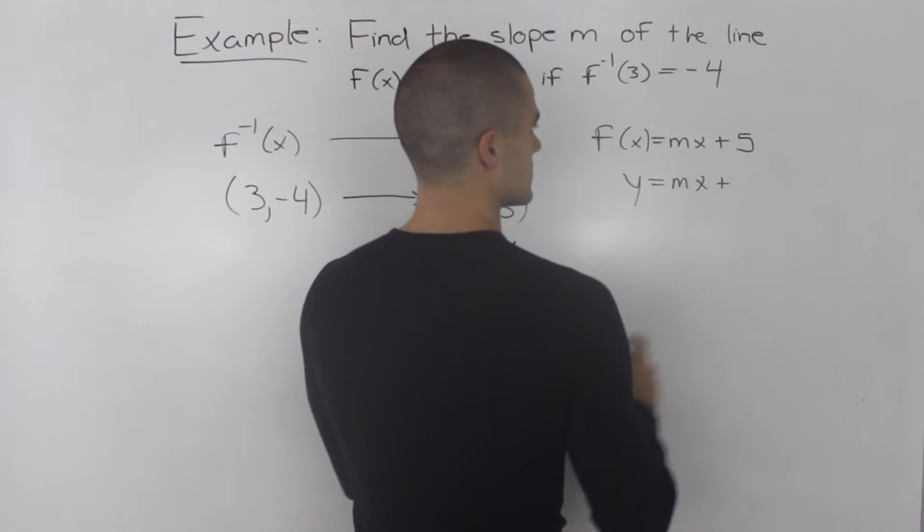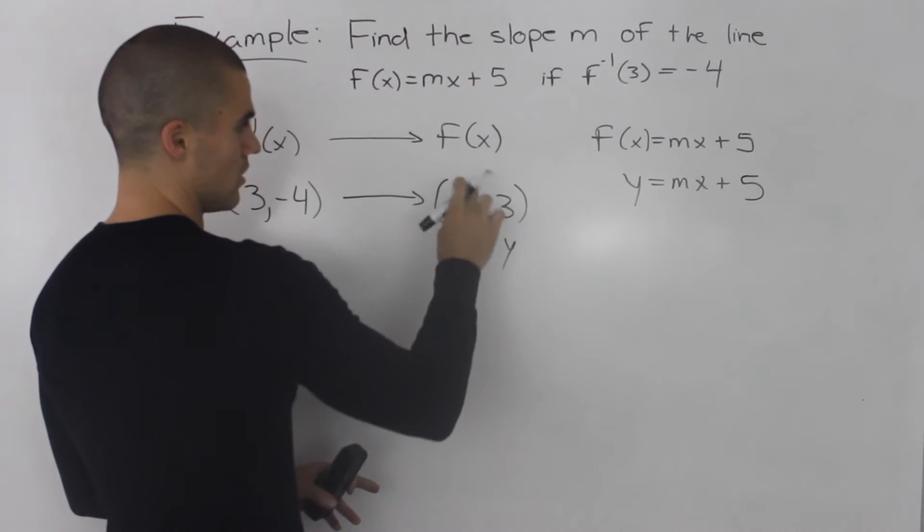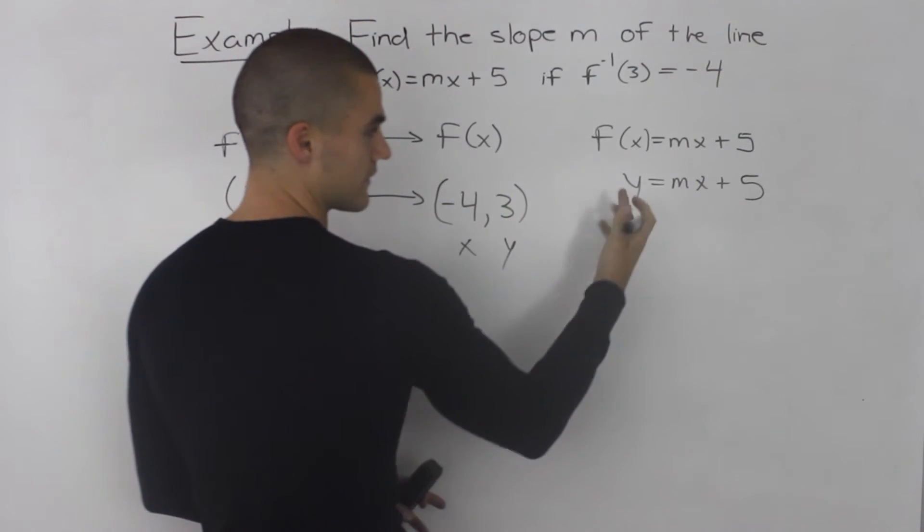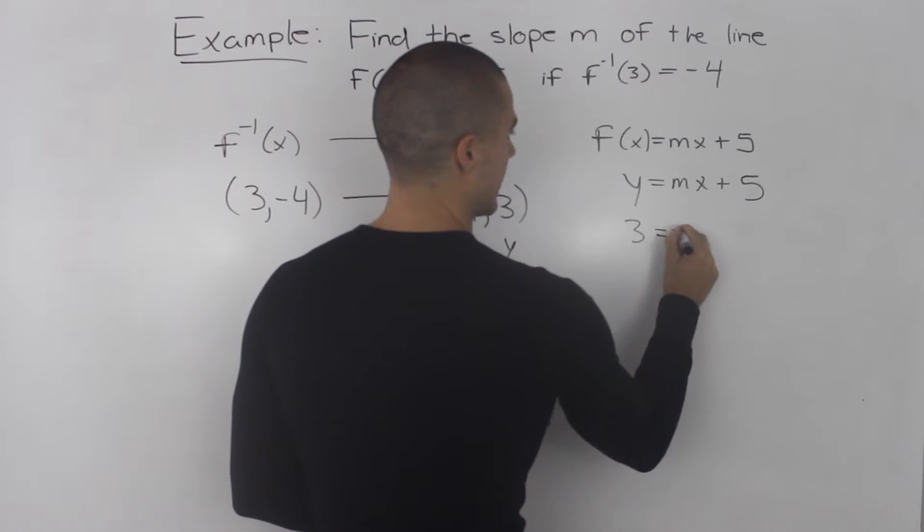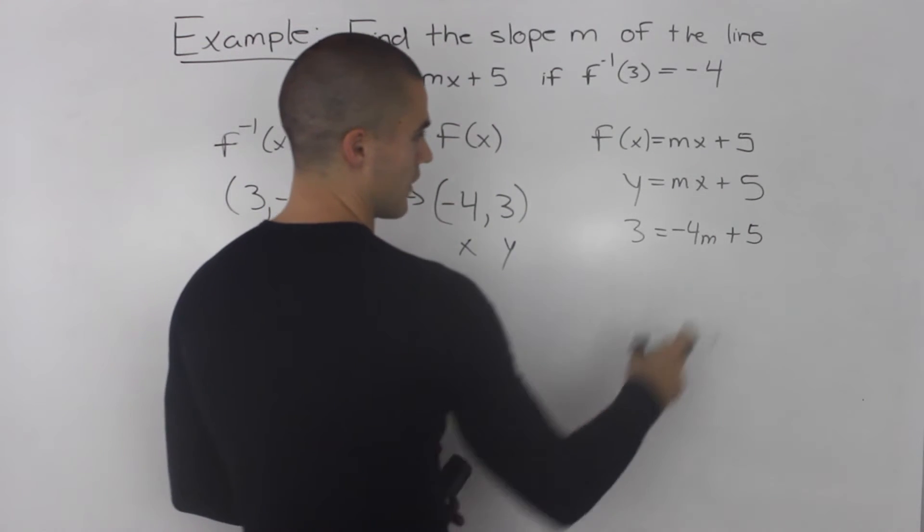Let me write this a little nicer. So now all you have to do is plug in for x negative 4 and then for y 3, and then solve for m. So we have 3 = -4m + 5, and then we just solve for m.